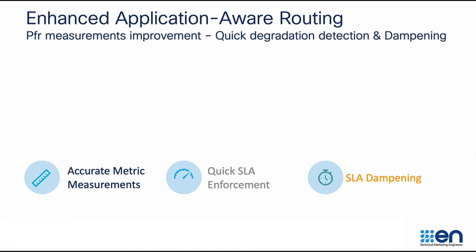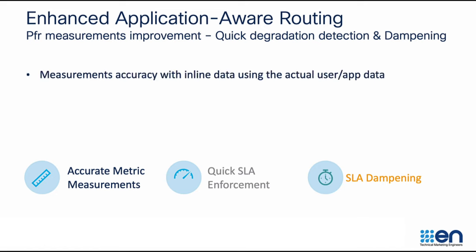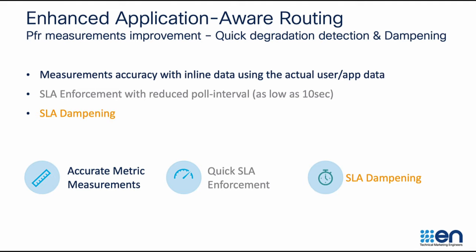Enhanced application-aware routing has three things: accurate metric measurements using inline data, quick SLA enforcement — being able to switch over the traffic to a better path with as low as 10 seconds — and SLA dampening, being able to monitor the stability of the WAN circuit flaps and dampen the tunnel before adding it back into forwarding.